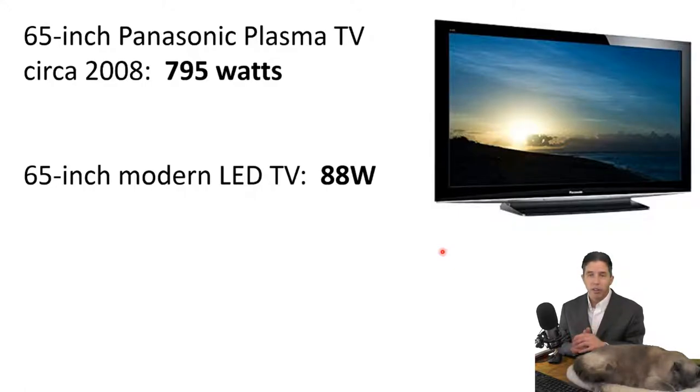There are similar stories with a lot of the technology in our homes. So for example, 10 years ago a plasma television, 65 inch plasma television used close to 800 watts. Now the same size television using LEDs for the lighting, 88 watts, right, huge difference. And old computers used more electricity, old refrigerators used more electricity. We could go on and on through all kinds of technology but in this class what we're going to do is we're going to do some math with bulb replacements and it's the same math that we've done before but this time we're going to swap out one bulb for another.